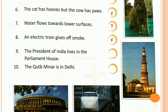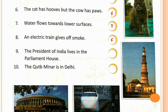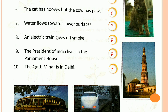Number 9: The President of India lives in Parliament — it's FALSE. The President lives in Rashtrapati Bhavan, not in Parliament. Number 10: The Qutub Minar is in Delhi — it's TRUE. Qutub Minar is in Delhi. Children, you all understand about this lesson.